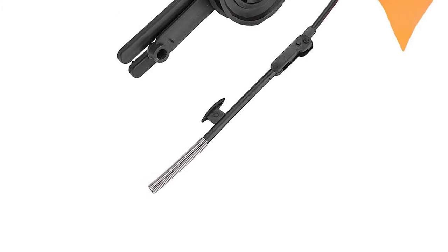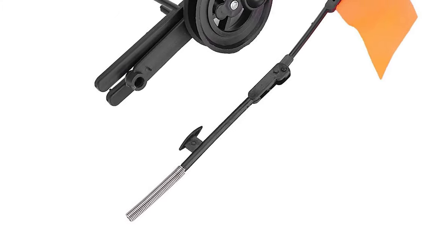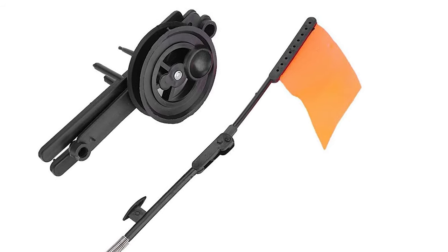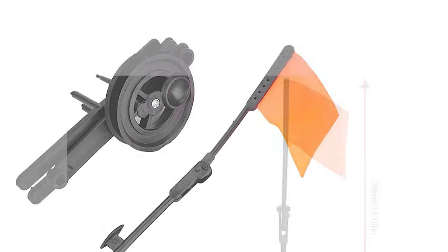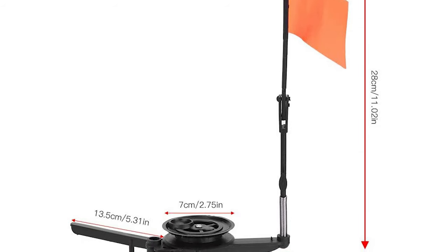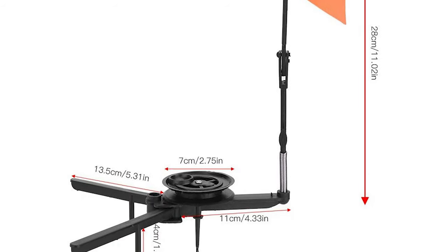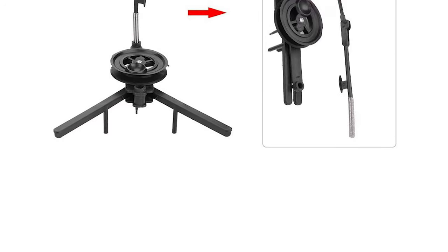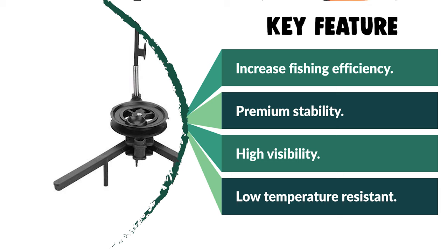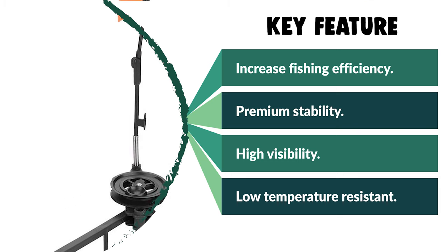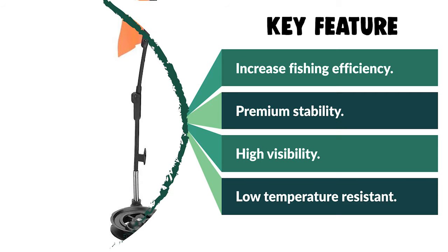The ice fishing tip-up can free your hands so you can keep them warm while ice fishing and it can increase the fishing efficiency. It comes with a big round base plate and three legs which increases friction on the ice surface for better stability. It also comes with an orange flag that accents its position making it easy for you to see the fishing process. In addition, this ice fishing pole tip-up is made of quality materials resistant to low temperature, unbreakable and durable for long time use. It can hold the fishing rod securely, giving you a convenient experience.